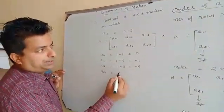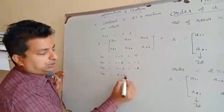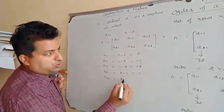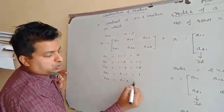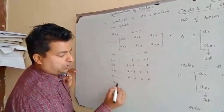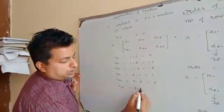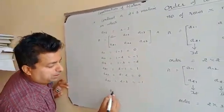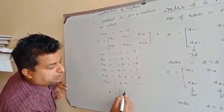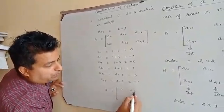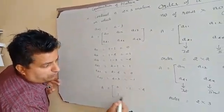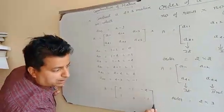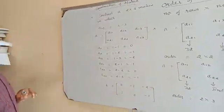A21: i is 2, j is 1, which gives 1. A22: i is 2, j is 2, which gives 0. A23: i is 2, j is 3, which gives minus 1. This means the matrix is: 0, minus 1, minus 2 in the first row and 1, 0, minus 1 in the second row. This is the construction of a matrix.